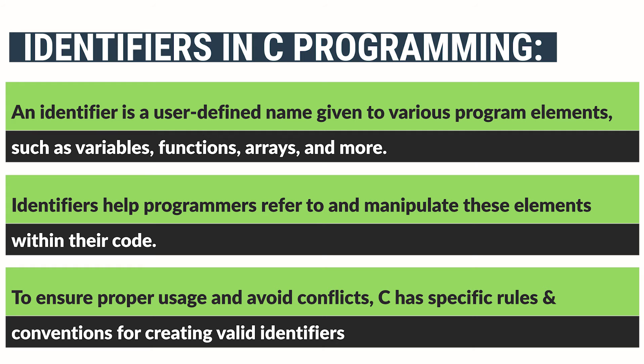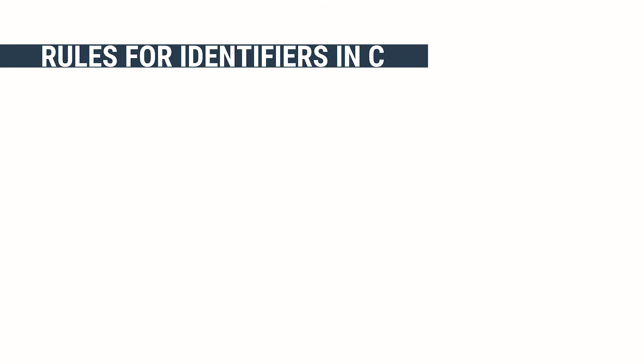Identifiers help programmers refer to and manipulate these elements within their code. To ensure proper usage and avoid conflicts, C has specific rules and conventions for creating valid identifiers. Rules for identifiers in C.